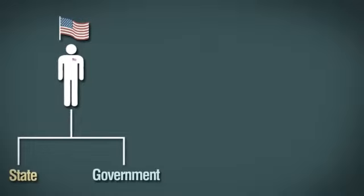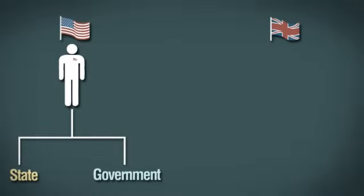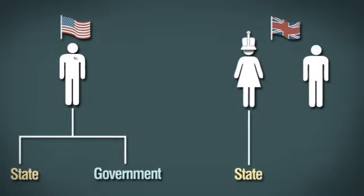In the US, the president is both the head of state and the head of government. In the UK, these roles are carried out separately by the monarch and the prime minister.